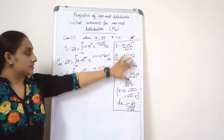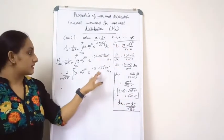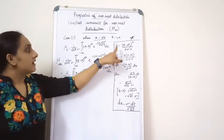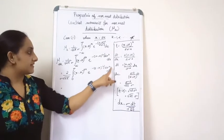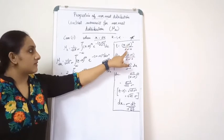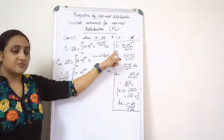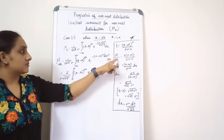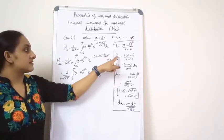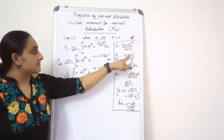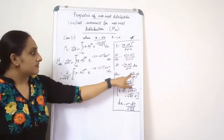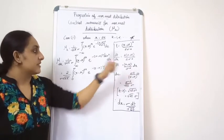We replace the exponent with t, so e raised to minus t. Differentiating, dt by dx equals x minus mu divided by sigma square, so dx equals sigma square by x minus mu dt. From the substitution, x minus mu equals root 2t sigma, so substituting: dx equals sigma square divided by root 2t sigma dt, and sigma cancels to give sigma dt by root 2t.